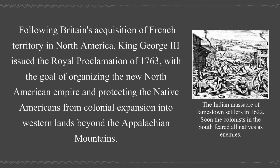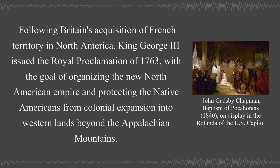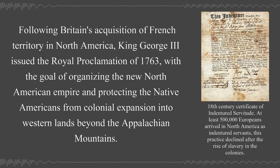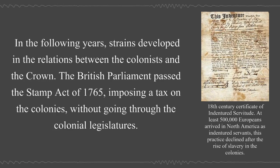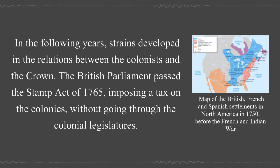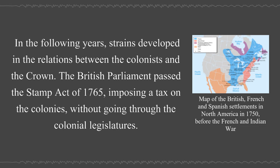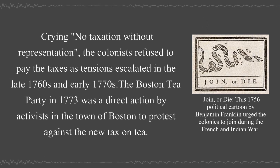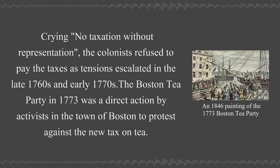Following Britain's acquisition of French territory in North America, King George III issued the Royal Proclamation of 1763, with the goal of organizing the new North American empire and protecting the Native Americans from colonial expansion into western lands beyond the Appalachian Mountains. In the following years, strains developed in the relations between the colonists and the crown. The British Parliament passed the Stamp Act of 1765, imposing a tax on the colonies without going through the colonial legislatures. Did Parliament have the right to tax Americans who were not represented in it? Crying 'no taxation without representation,' the colonists refused to pay the taxes as tensions escalated in the late 1760s and early 1770s.